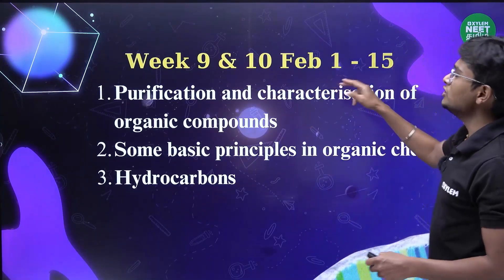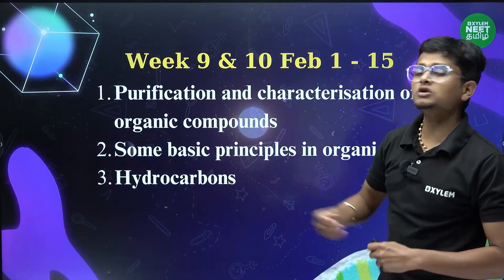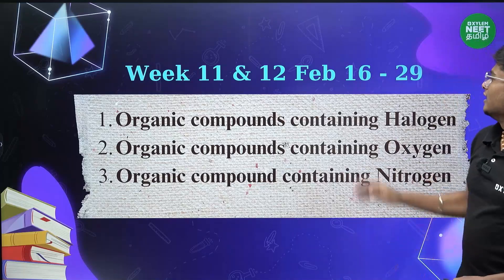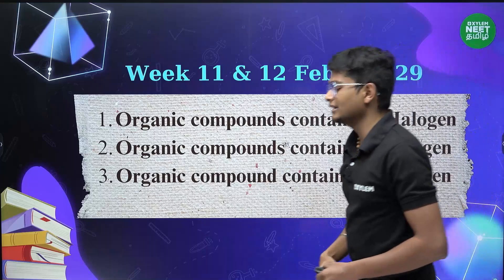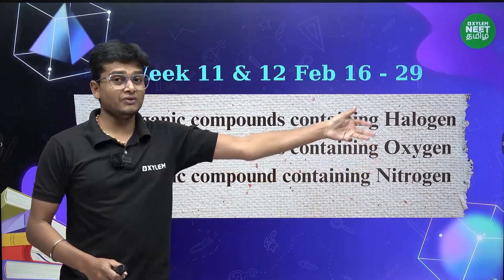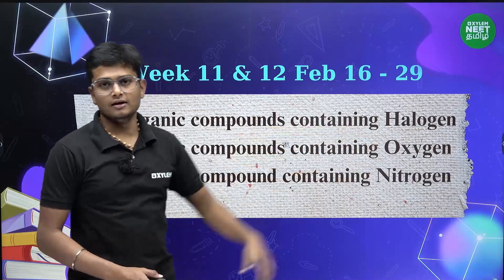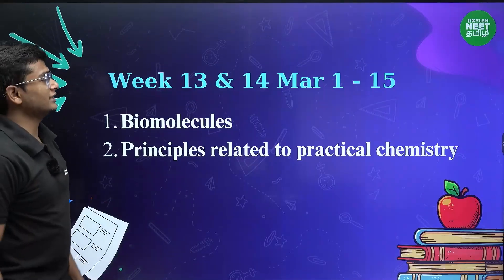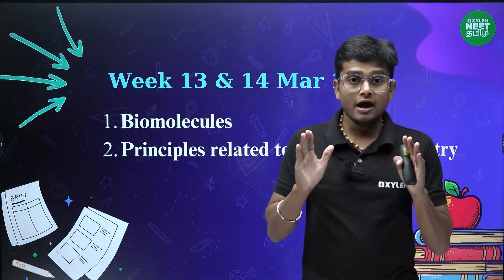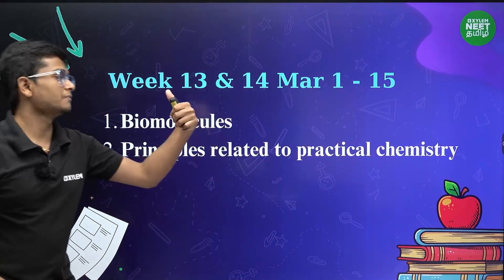Weeks nine and ten cover organic basics. Then weeks eleven and twelve: February 16th to 29th — three chapters: organic compounds containing halogen, oxygen, and nitrogen. The oxygen section includes alcohols, phenols, and ethers, followed by aldehydes, ketones, and carboxylic acids — all the chapters in the syllabus.